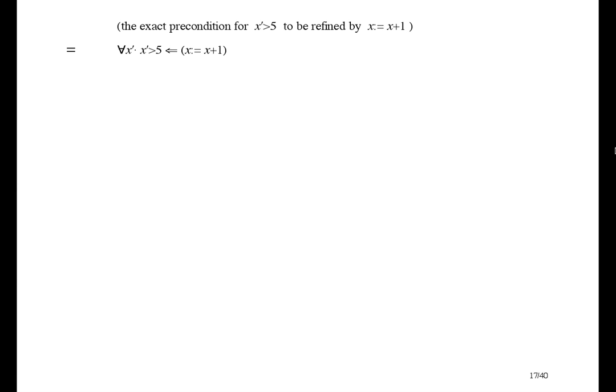The formula says, for all x prime, x prime is greater than 5 if x gets x plus 1. Since there's only one variable, the assignment is just x prime equals x plus 1.